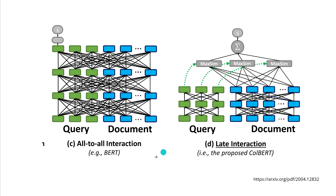If you want to see it in a visualization: normally if you have an all-to-all interaction in a BERT structure, you have the query and then the document, and to calculate semantic coherence and relevance you go all-to-all. But in the late interaction, they separate up to a certain stage the query interconnectiveness and the document interconnectiveness, and then at a later stage they bring it together.